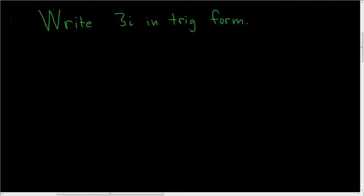Write 3i in trig form. Let's go ahead and do it. This one is so easy, we can avoid using any formulas. So the final answer will look like r parentheses cosine theta plus i sine theta.